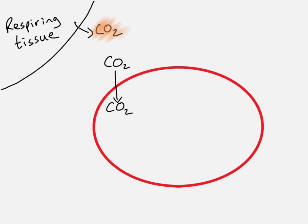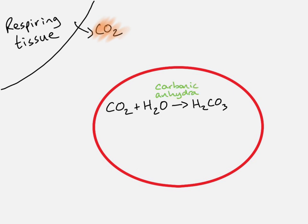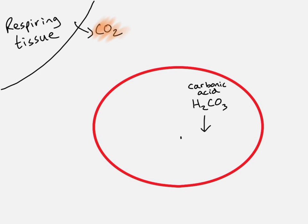The majority of the carbon dioxide diffuses into the red blood cell. Once inside, several things happen. It reacts with water to form something called carbonic acid — an enzyme called carbonic anhydrase catalyzes that reaction. The carbonic acid will immediately dissociate into hydrogen carbonate ions and protons, or hydrogen ions.